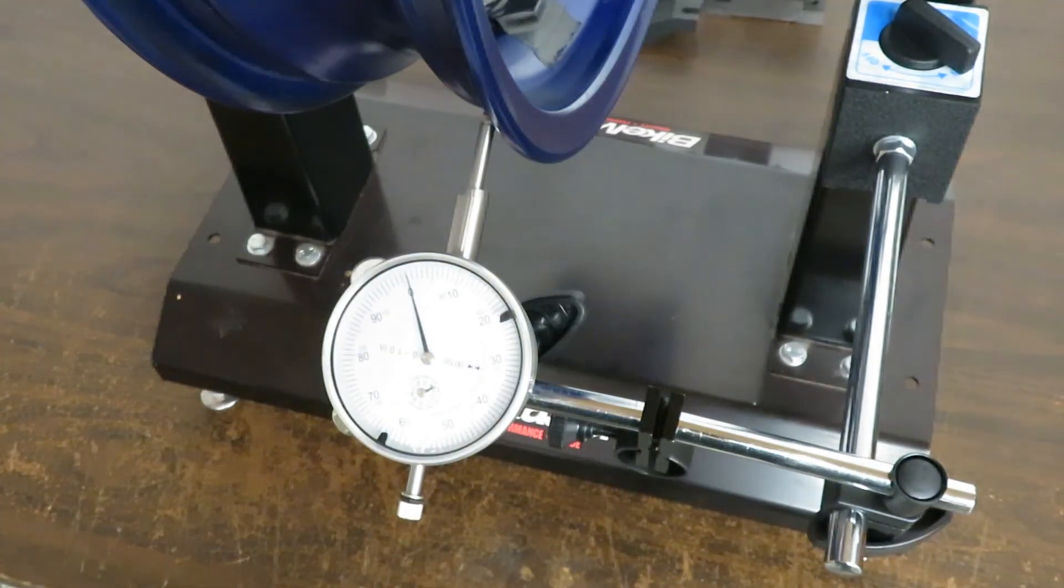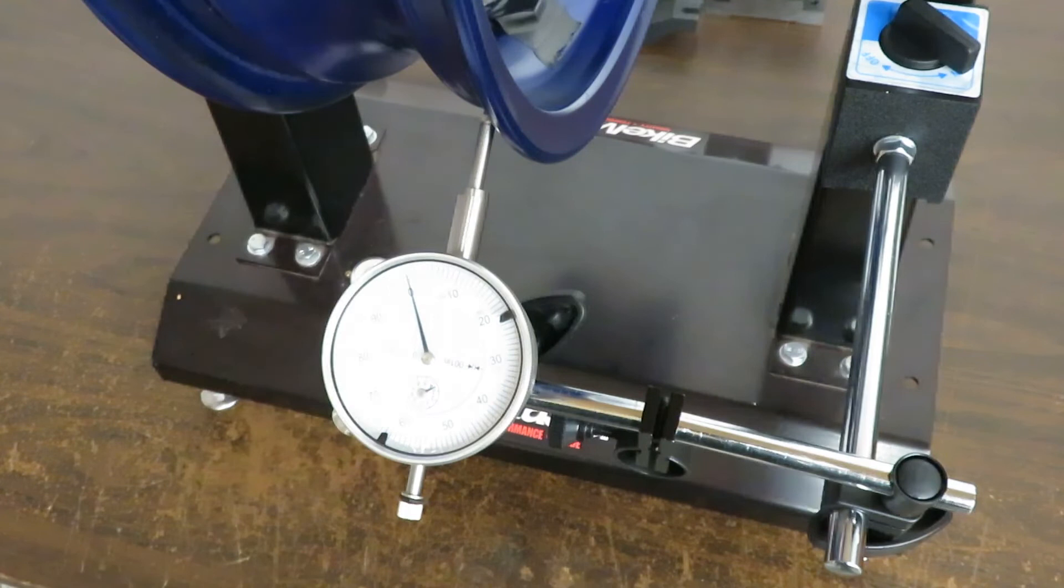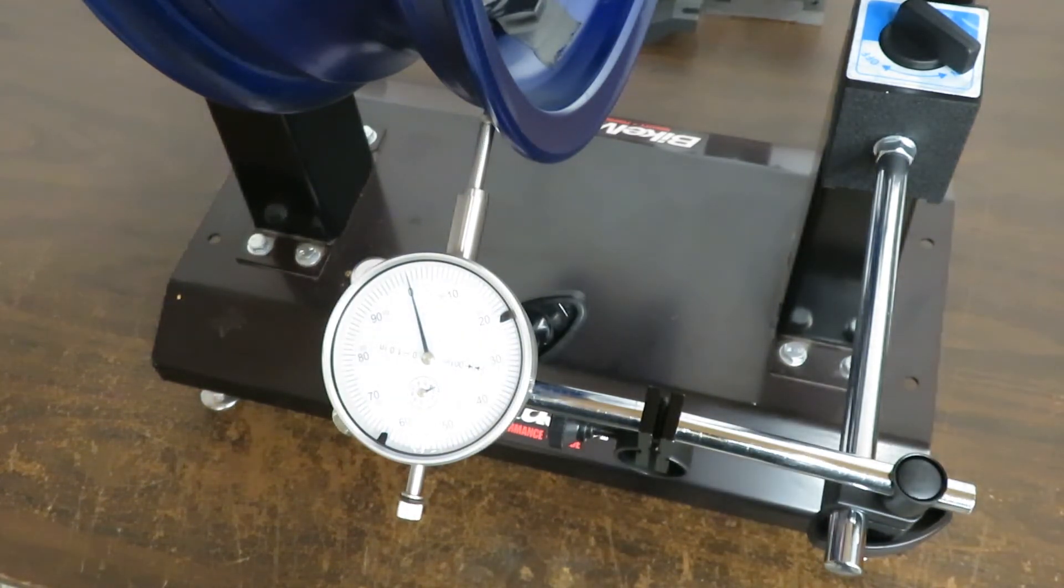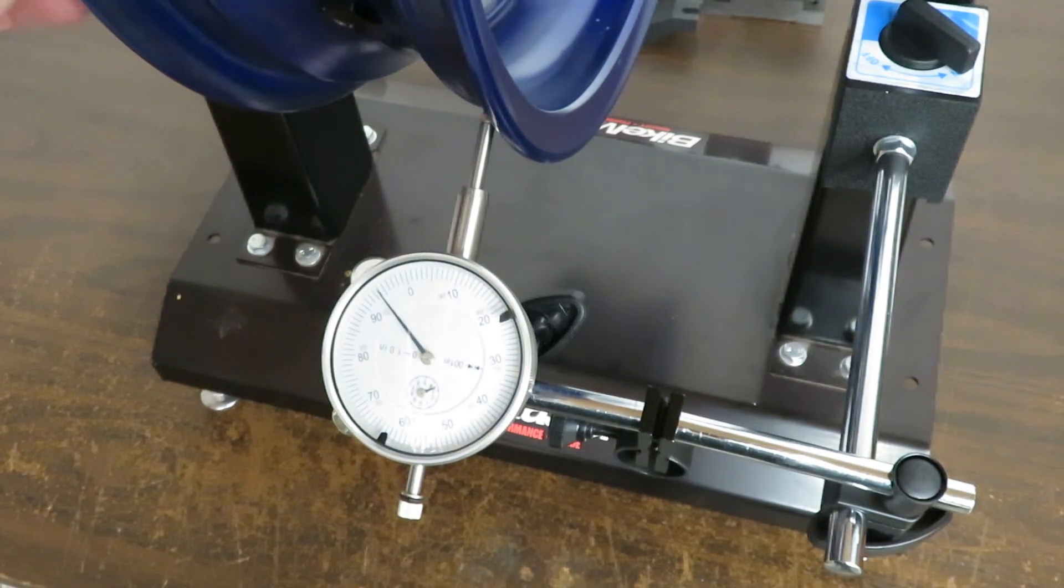So here I've set the dial gauge up to measure the radial runout on the outside of the wheel to show you how we could do that as well. It's basically the same exact methodology. It's simply just a different angle at which we're measuring the deflection of the wheel. I hope this helps.